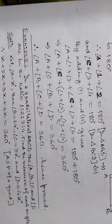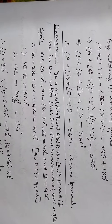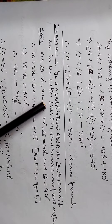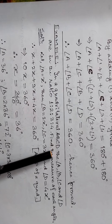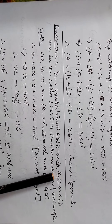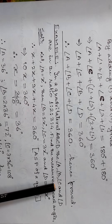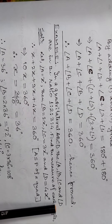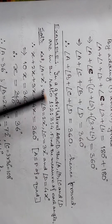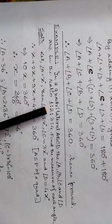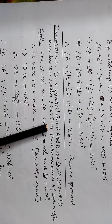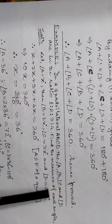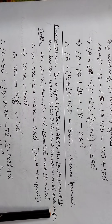This is an example. In a quadrilateral ABCD, the angles A, B, C, D are in the ratio 1 is to 2 is to 3 is to 4. Find the measure of each angle.